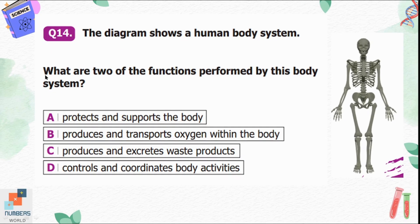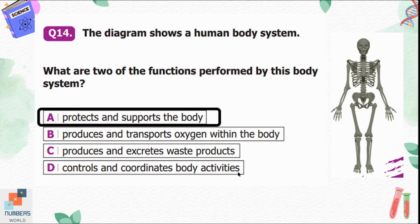Question number fourteen: the diagram shows a human body system. What are two functions performed by this body system? Option A, protects and supports the body; B, produces and transports oxygen; C, produces and excretes waste products; D, controls and coordinates body activities. The skeleton protects and supports the organs in our body, so option A is correct.